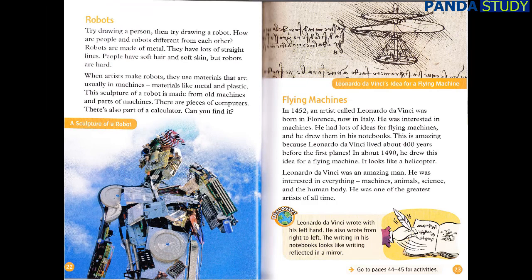Try drawing a person, then try drawing a robot. How are people and robots different from each other? Robots are made of metal and have lots of straight lines. People have soft hair and soft skin, but robots are hard. When artists make robots, they use materials that are usually in machines — materials like metal and plastic. This sculpture of a robot is made from old machines and parts of machines. There are pieces of computers, and there's also part of a calculator. Can you find it?